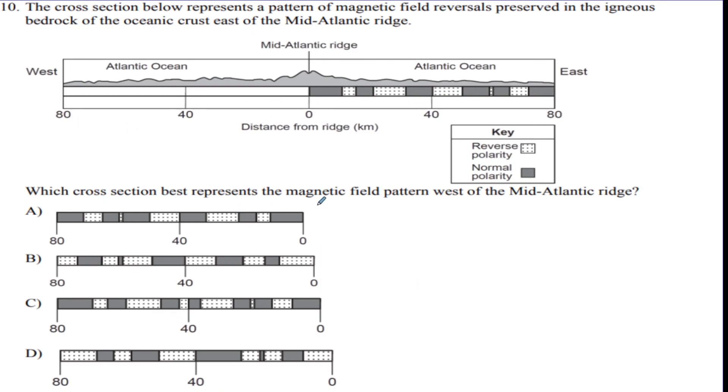Last question. Which cross-section best represents the magnetic field pattern west of the Mid-Atlantic Ridge? Remember, you want to find the mirror image that fits in over here. So you want to, this black area here should be right here on the right. So the only ones that that could be is this one and this one. And you want it to be the exact same size and pattern as this pattern here. So the answer here is A. If you were to put A in this spot, it would be a perfect mirror image.